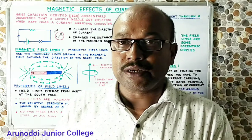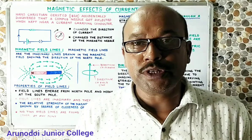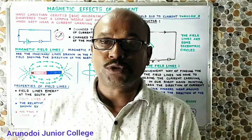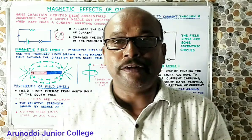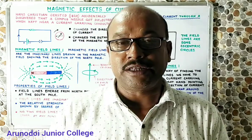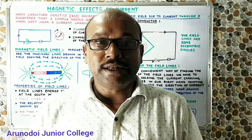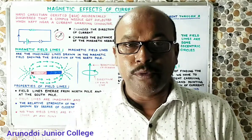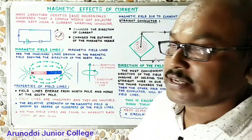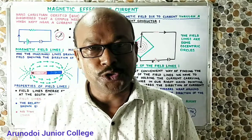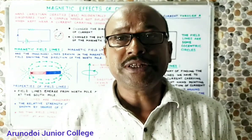The name itself indicates that we are going to discuss a relation between magnetism and electricity. Interestingly, at the time of discovery of both magnetism and electricity, nobody believed these two different phenomena might have some connection. Accidentally, it was discovered by one scientist — Hans Christian Orsted — in 1820.